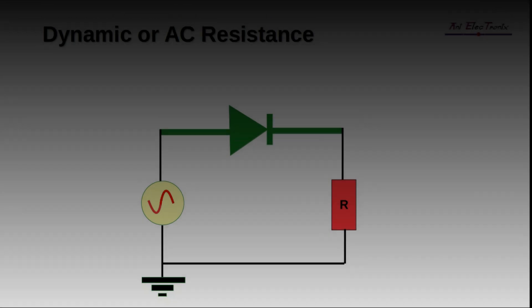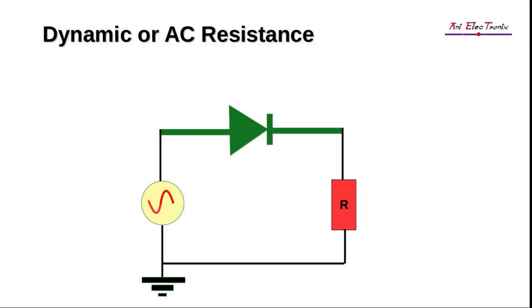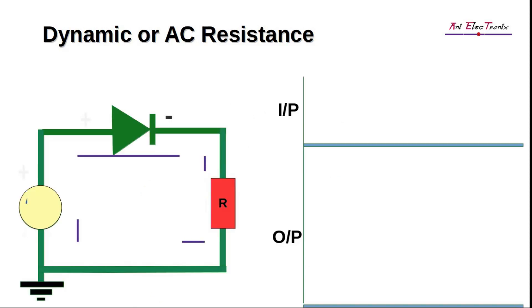Dynamic or AC resistance refers to the resistance the P-N junction diode offers whenever AC voltage is applied in forward bias. Unlike DC circuits, AC circuits do not have a single direction of current flow. They flow in both directions.